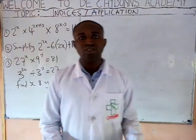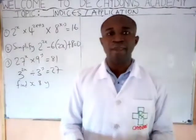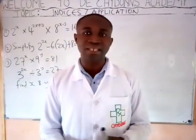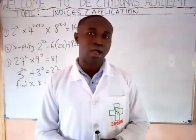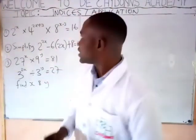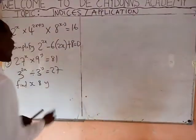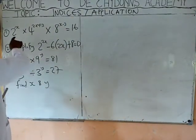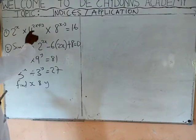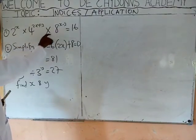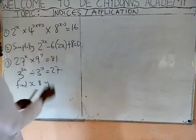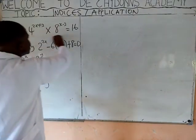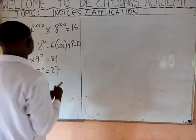Welcome again to the continuation of the topic indices — 1 to 6 applications of these indices we talk about. In these questions we have here, this one says 2 raised to the power of X times 4 raised to the power D times this. Ensure that everything is in this basic index form.